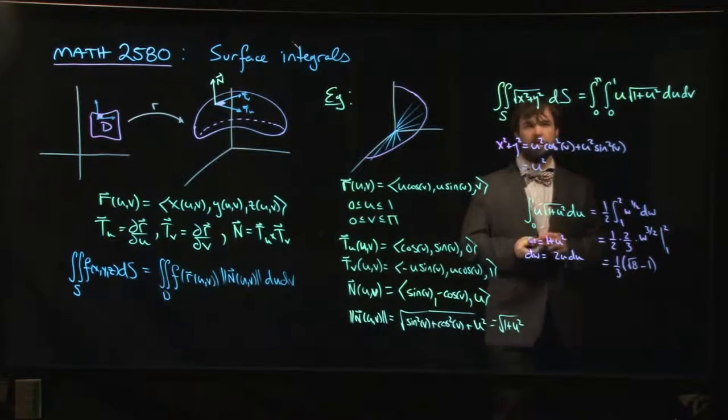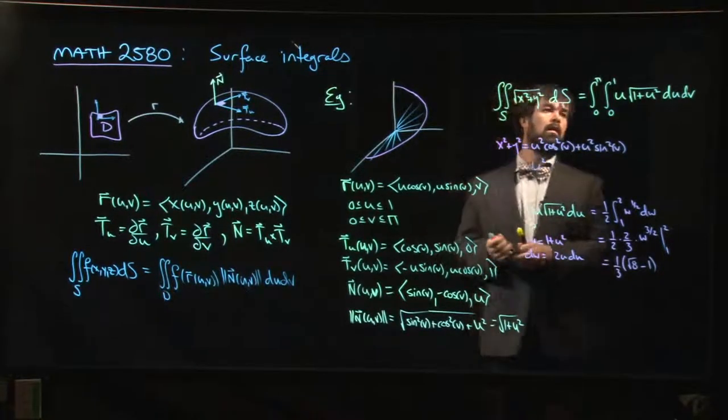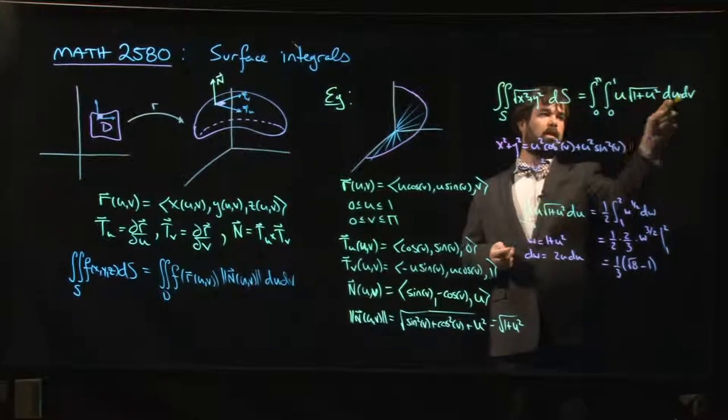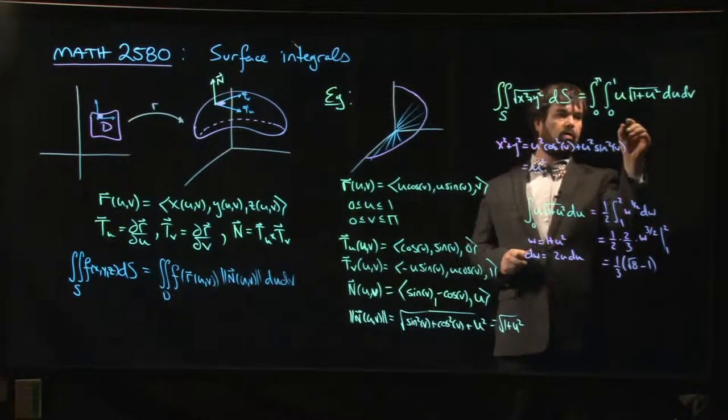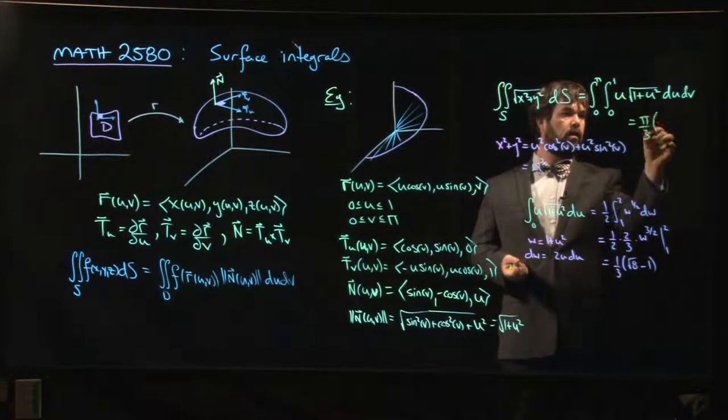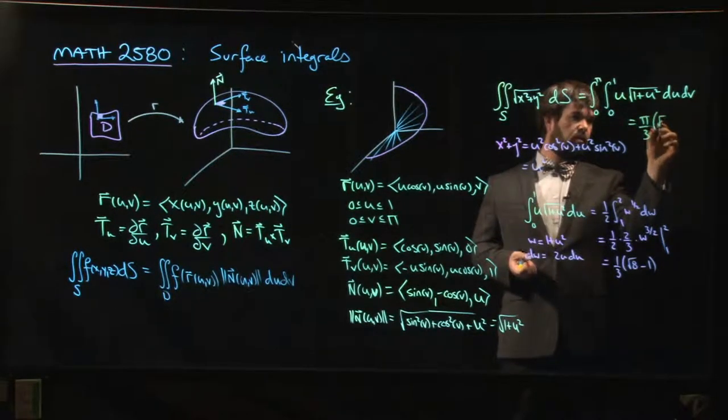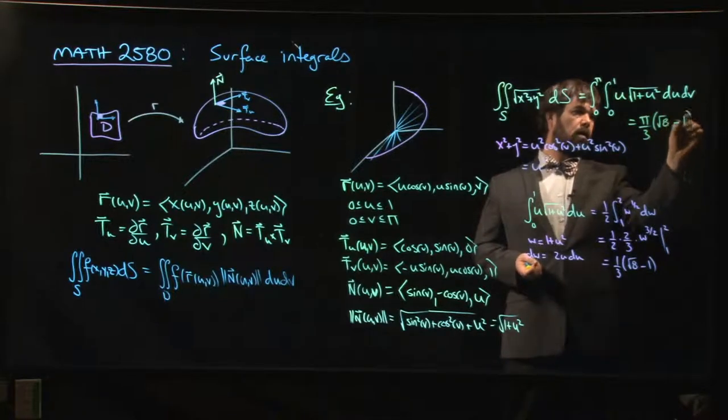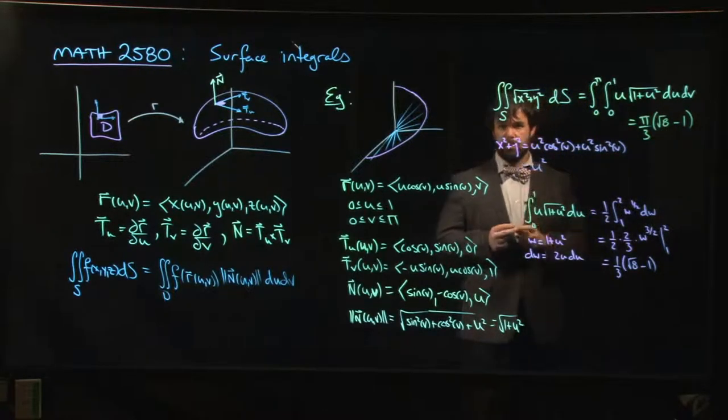And so for the original integral, that gives us the u part, the v part we just multiply by pi. So we get pi over 3 times root 8 minus 1, and we're done.